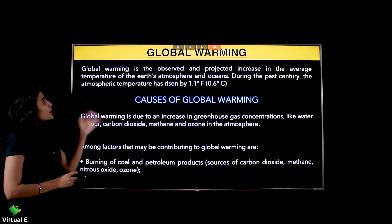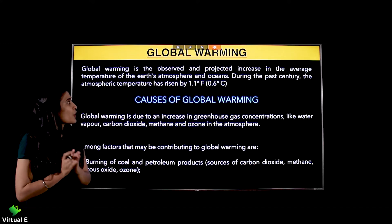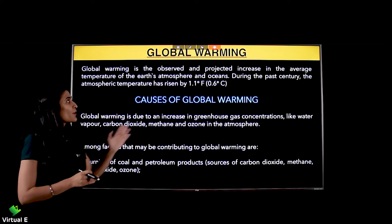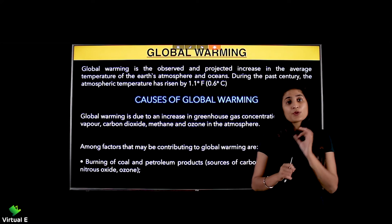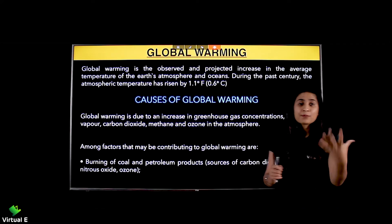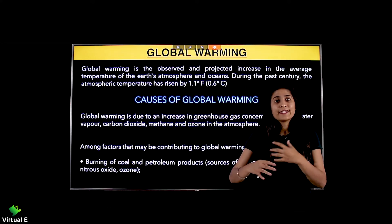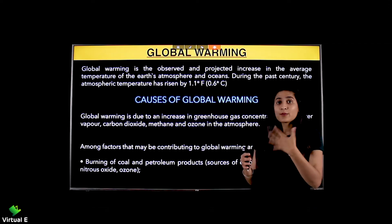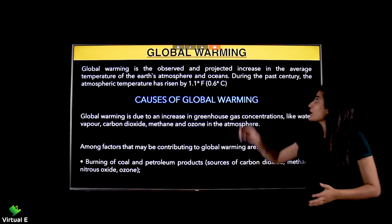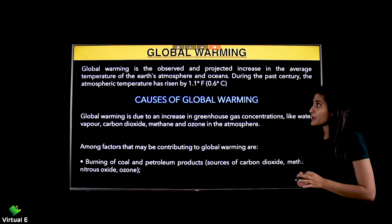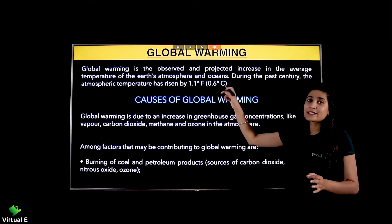Global warming is the observed and projected increase in the average temperature of Earth's atmosphere and oceans. Scientists have observed and projected an increase in heat produced. In the past century, the atmospheric temperature has risen by 1.1 degree Fahrenheit, that is 0.6 degree Celsius.